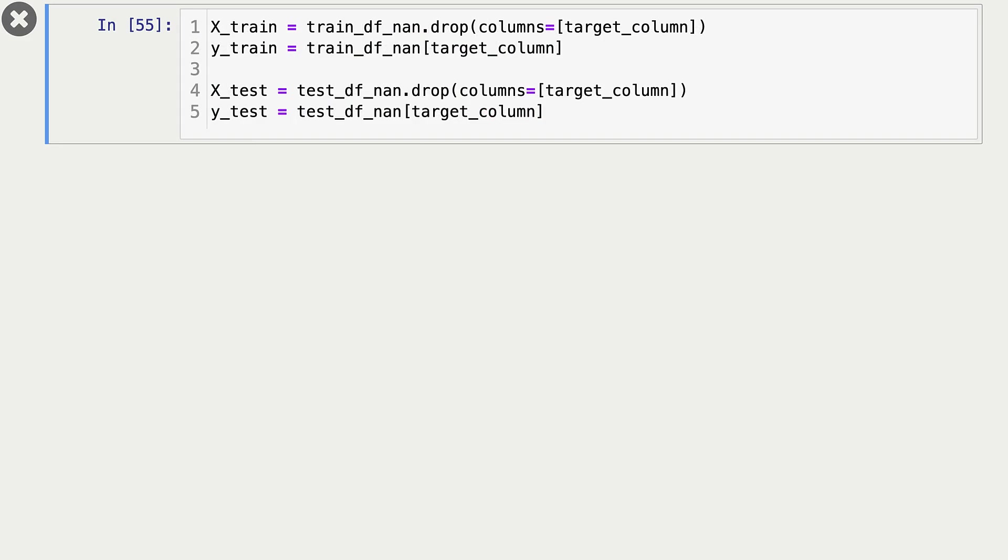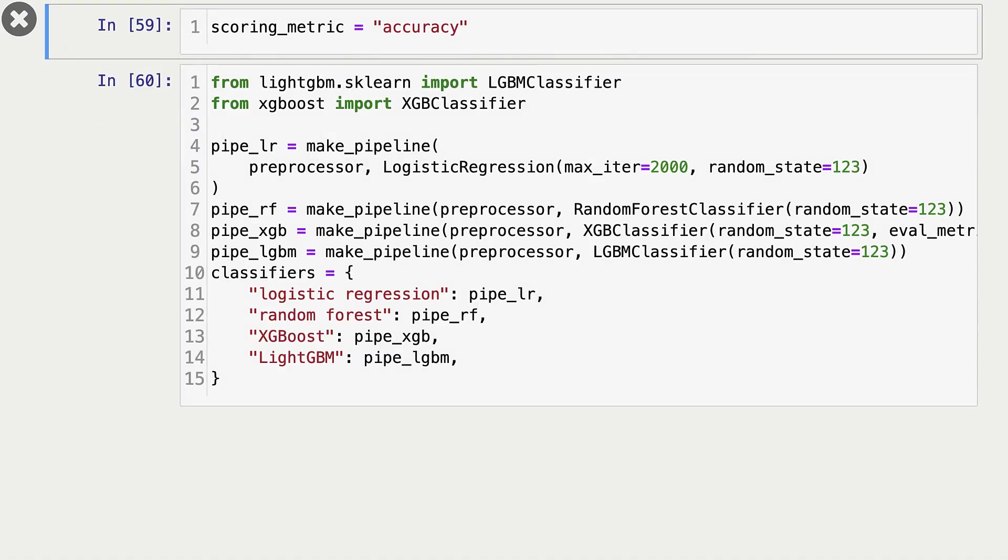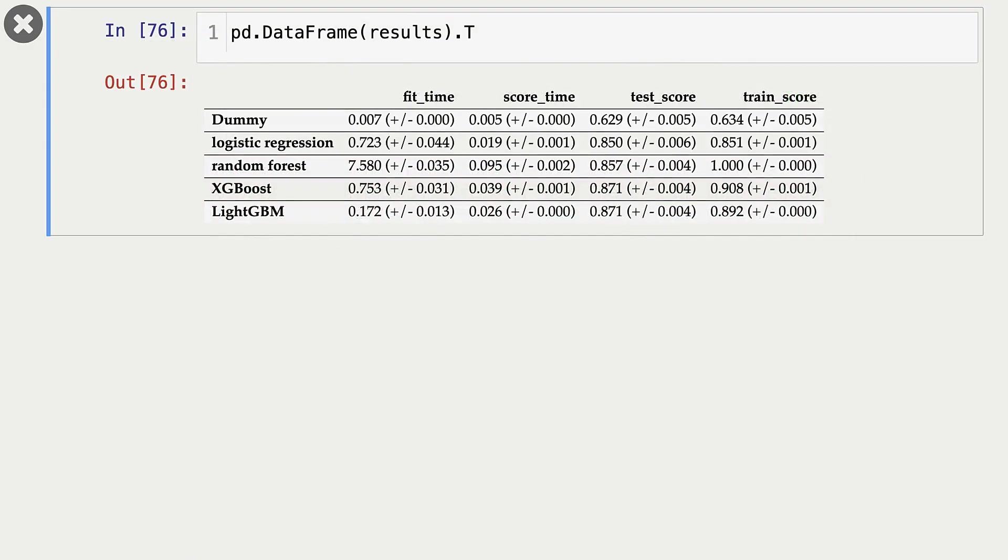Now I'm creating X_train, y_train, and these are the questions we already answered last time. I'm using accuracy as our scoring metric, and I'm using these four models for this demonstration: logistic regression, random forest, XGBoost, and LightGBM. This is our dummy classifier, and these are our results for our four models and dummy classifier.